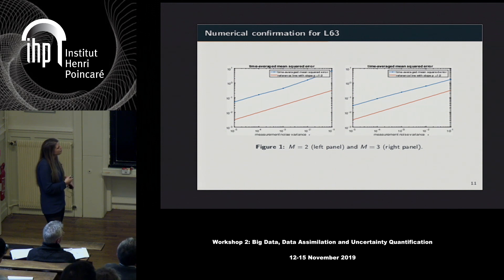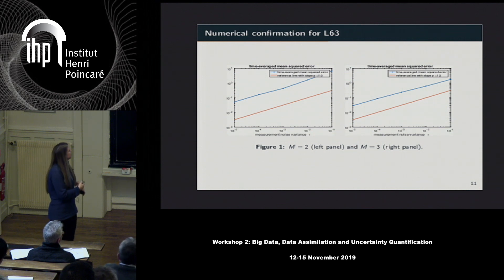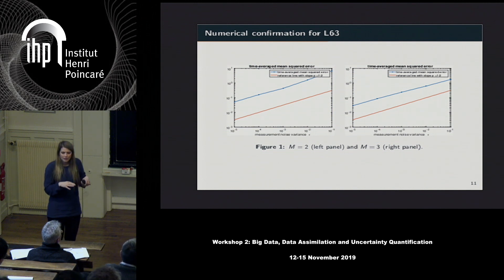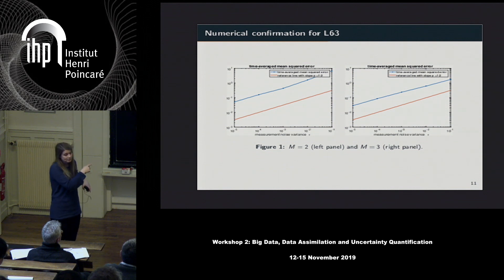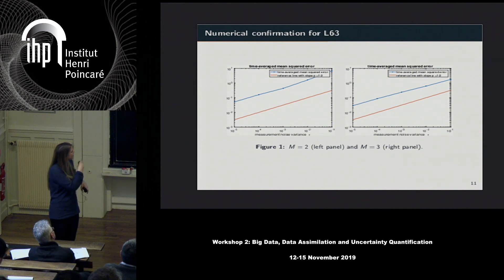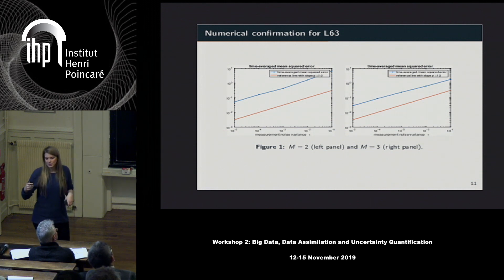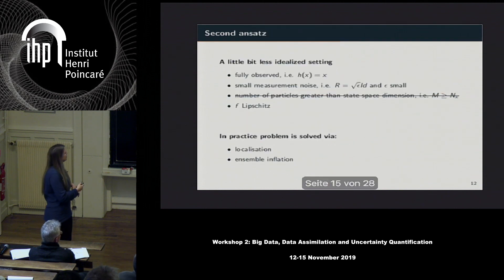We looked at the Lorenz 63 system numerically to confirm the results, even though rigorous proofs don't strictly require numerical confirmation. If we change the order of the measurement noise, the accuracy behaves accordingly. For the Lorenz 63 system, which is three-dimensional, the assumptions of the proofs require at least three ensemble members. We also tested with two ensemble members — where the covariance matrix becomes singular requiring some tricks — and we still got roughly the same order of behavior.